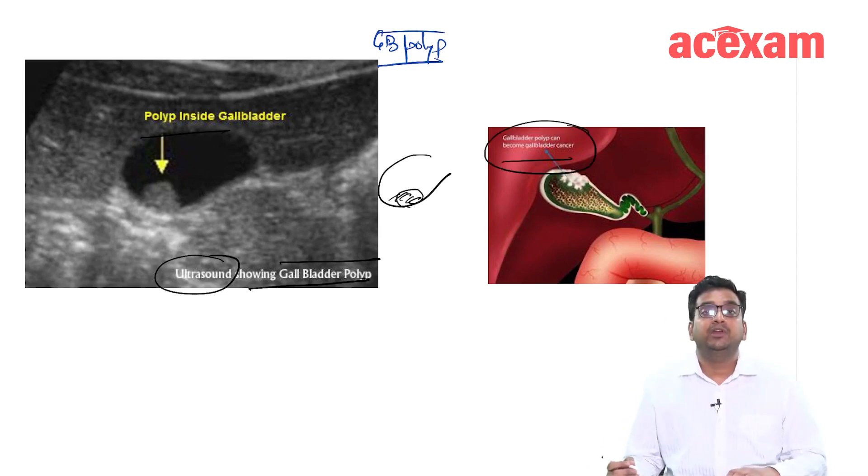A gallbladder polyp can lead to formation of carcinoma gallbladder. That is why it is very important to differentiate whether the polyp is malignant or not. We should first identify whether there is a possibility of developing a malignancy. And in those cases who are having a high possibility of malignancy, we should do a prophylactic cholecystectomy.